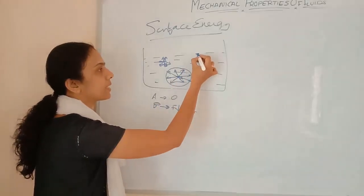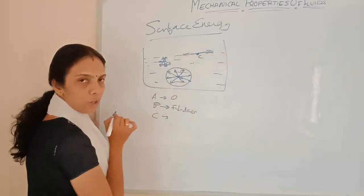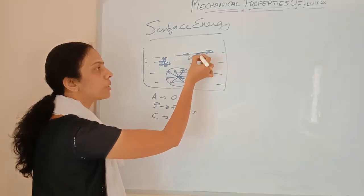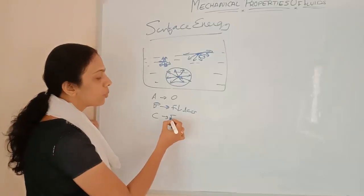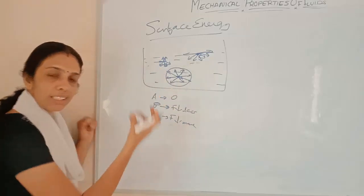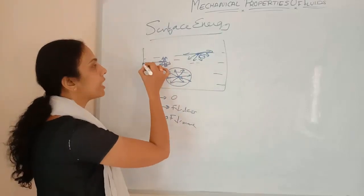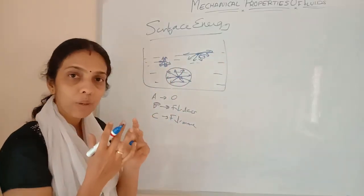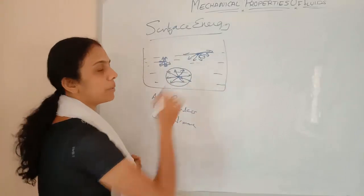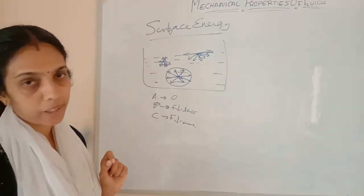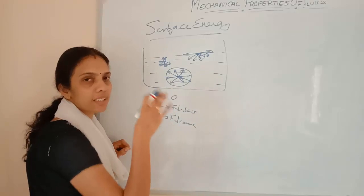The downward force is more at B. Now considering molecule C on the surface: through the surface, forces act in opposite directions from the side, but all other molecules are acting force in the downward direction. So it is experiencing more forces acting downward, pulling it downwards. This causes the surface to act as a stretched membrane. That is why it will always have a tendency toward minimum surface area.